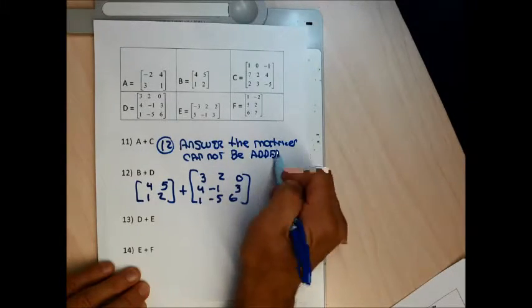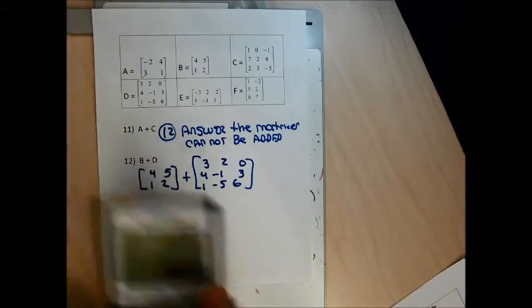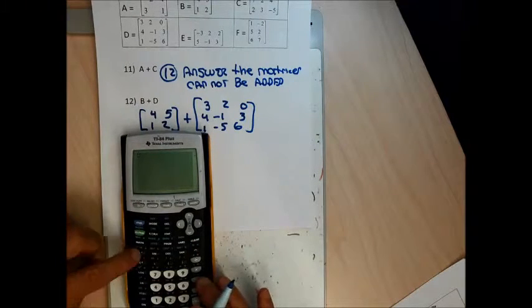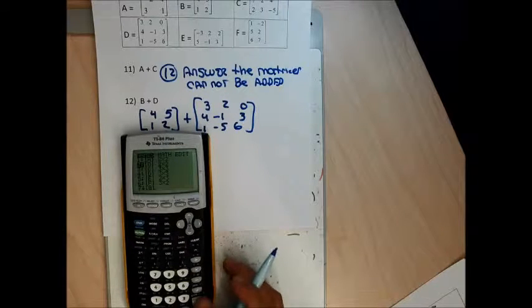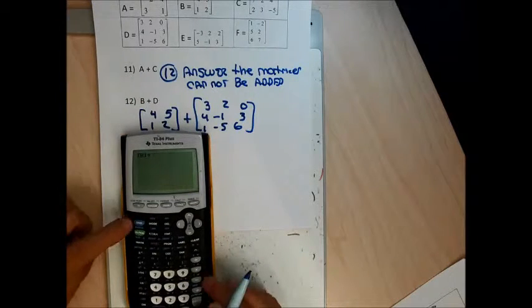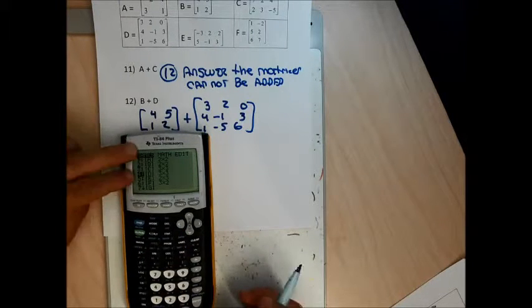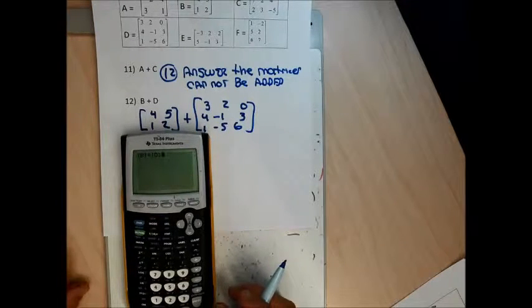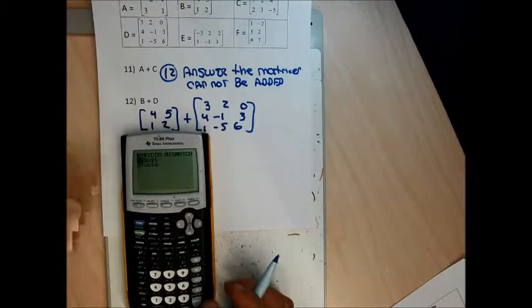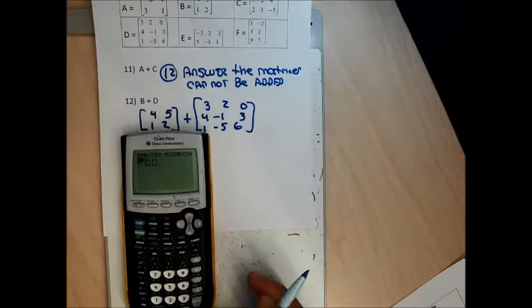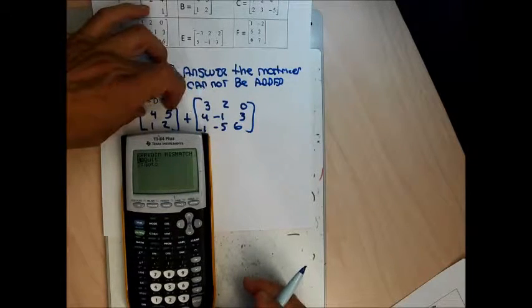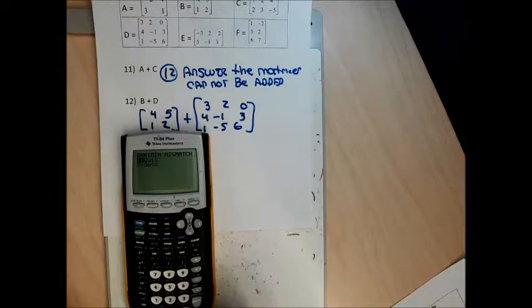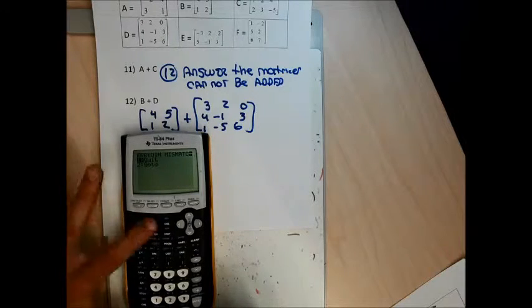The matrices cannot be added because to be added they must have exactly the same dimensions. Let me show you what happens on the calculator. I go second matrix names, go down to B, hit enter, then the plus sign, then second matrix, arrow down to D and hit enter. When I hit enter, my calculator gives me a dimension mismatch error — it means the 2 by 2 and 3 by 3 don't have the same dimensions so they can't be added. I'll hit second and quit.